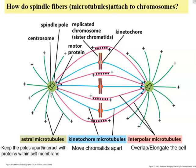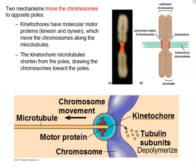Kinetochore microtubules are connected to kinetochores — proteins sitting on the centromere of chromosomes — and are involved in separating the chromosomes. The interpolar microtubules overlap and elongate the cell, because you need to push the DNA content apart before pinching the cell in half to complete division. Motor proteins are also involved and help with the entire separation process.